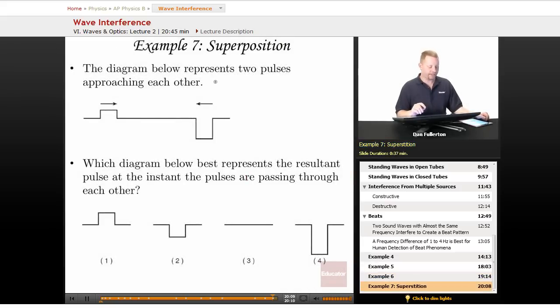One last sample problem. The diagram below represents two pulses approaching each other. Which diagram below best represents the resultant pulse at the instant the pulses are passing through each other?